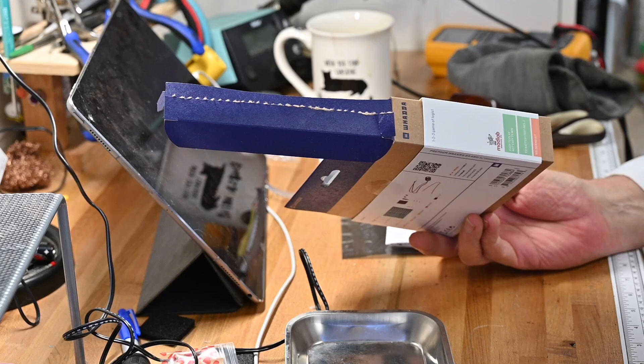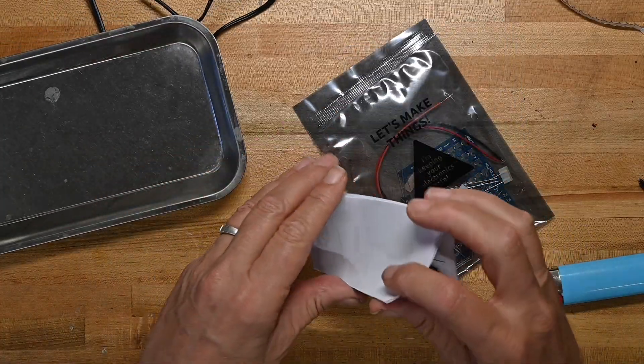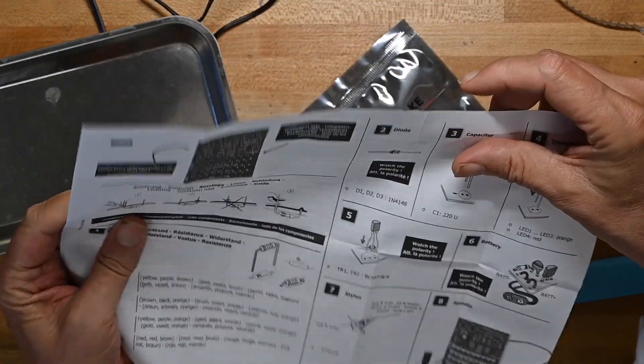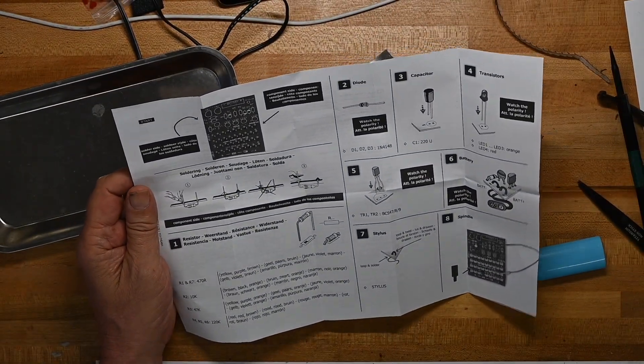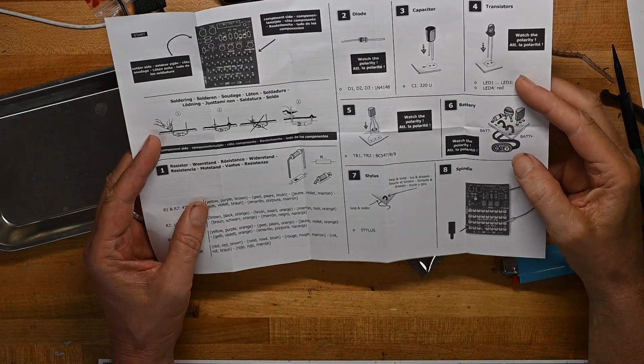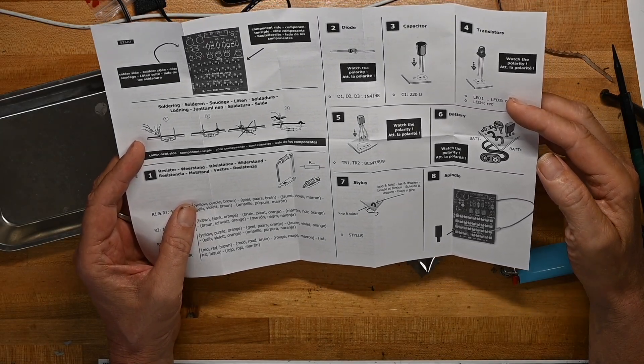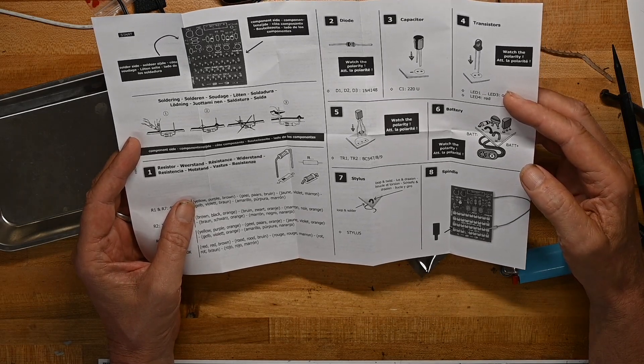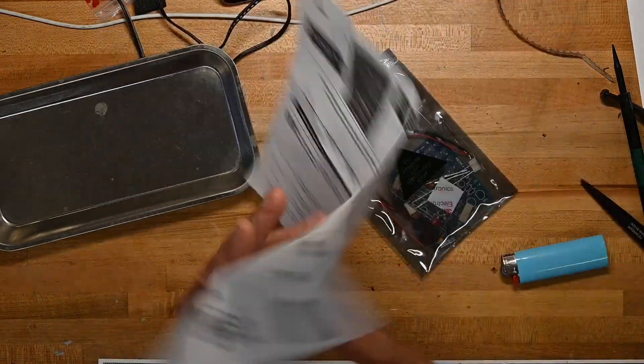Nothing left in the box, so we'll get it ready for recycling. Open up the piece of paper first. I'm going to back off a little bit. Solder side, component side, resistors, spindle, watch the polarity. And it's got a stylus, and I'm still not sure what it does.